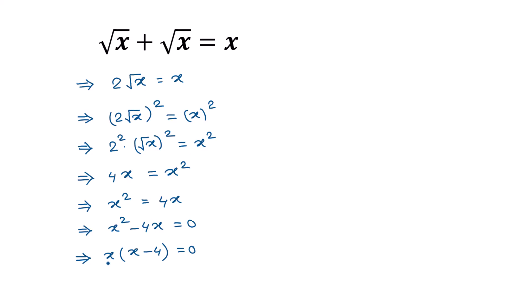So x minus 4 equals 0, giving x is equal to 0, or x minus 4 is equal to 0. Taking negative 4 to the right side, we get x is equal to 4.